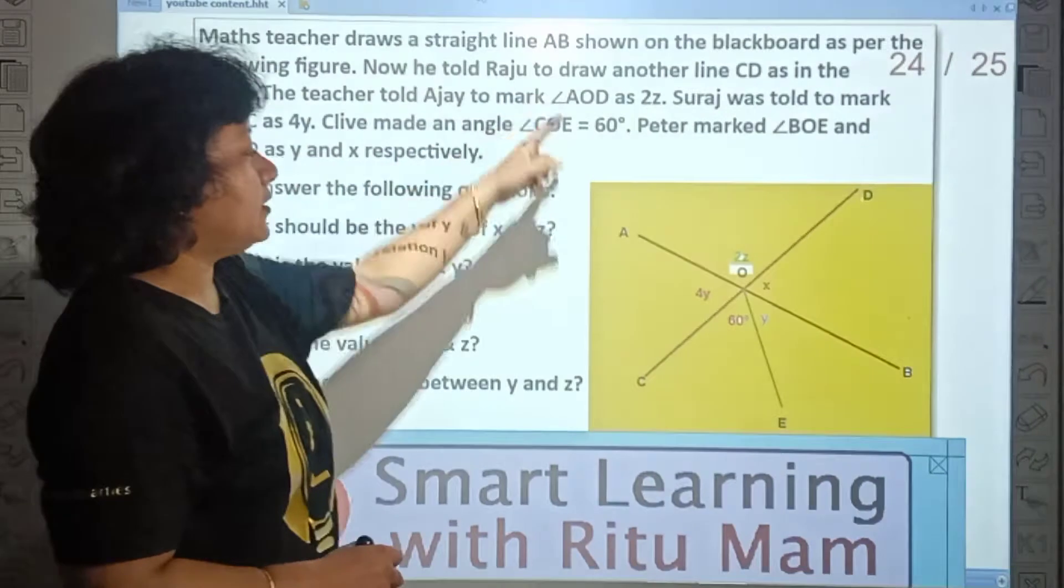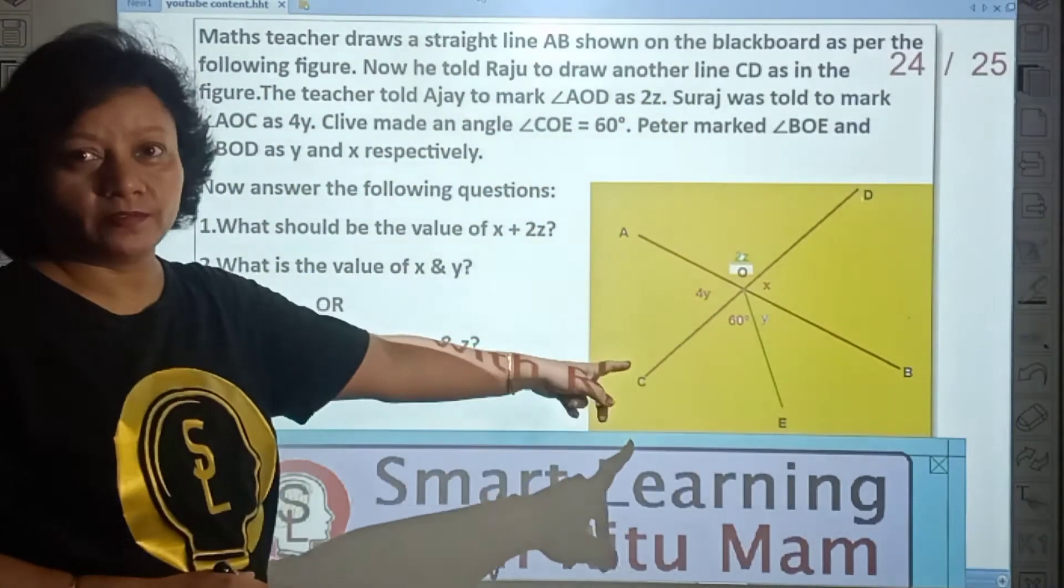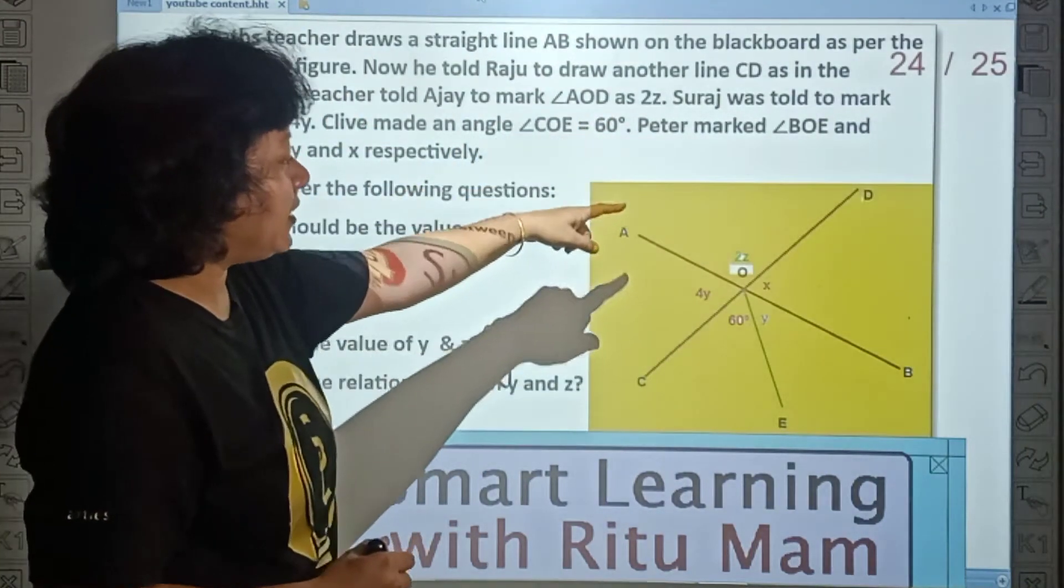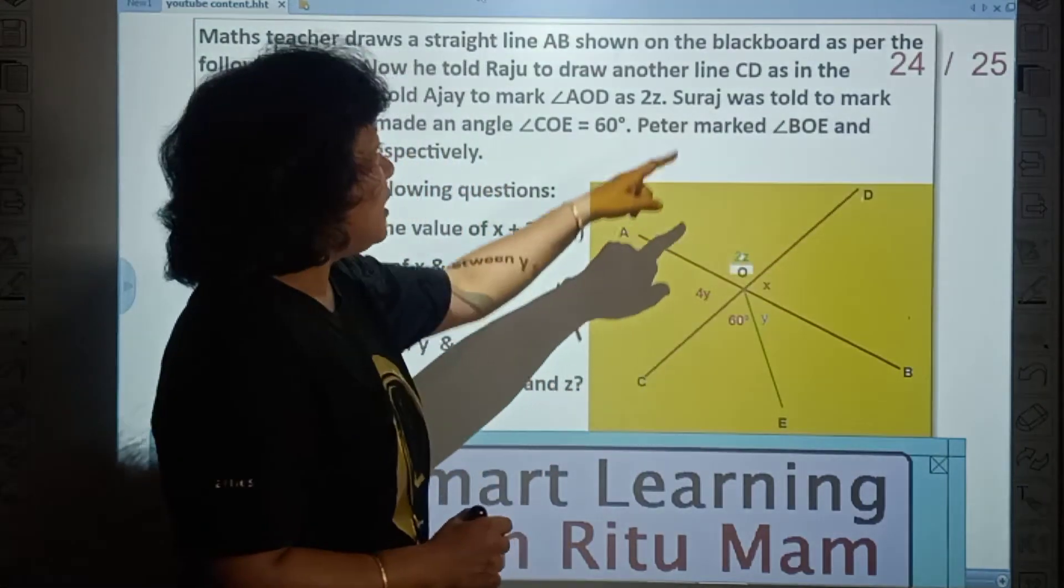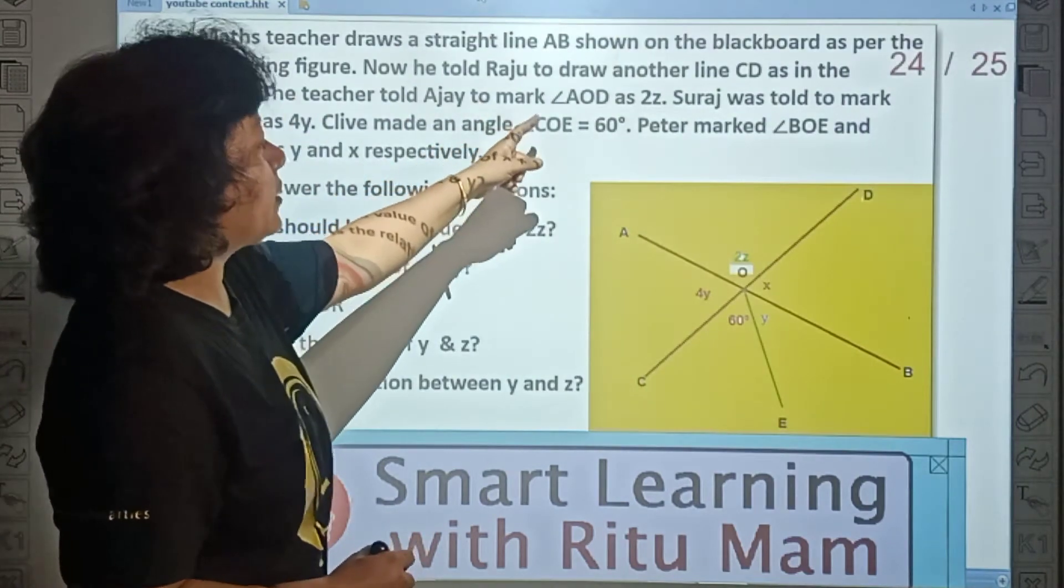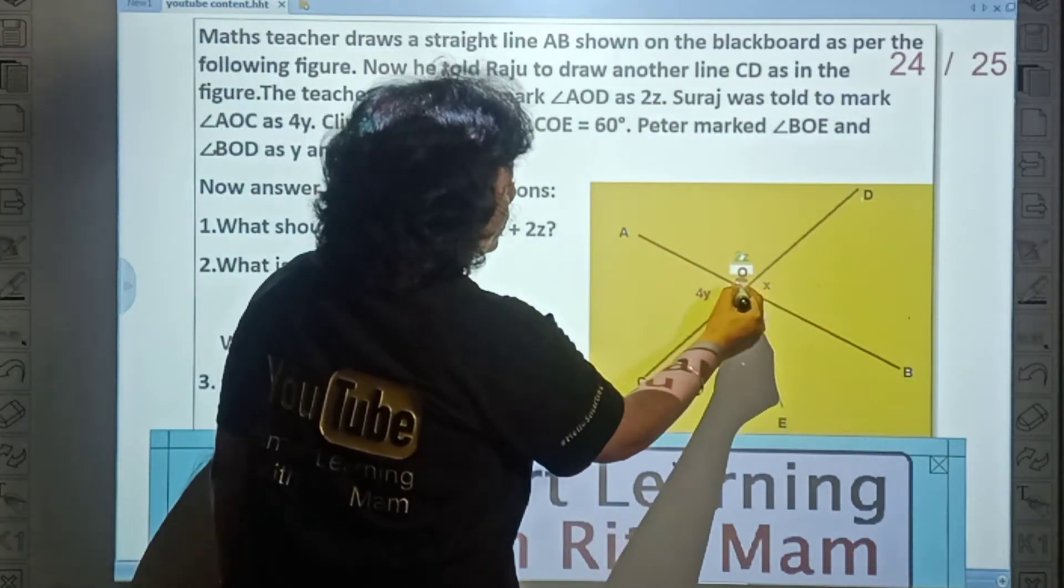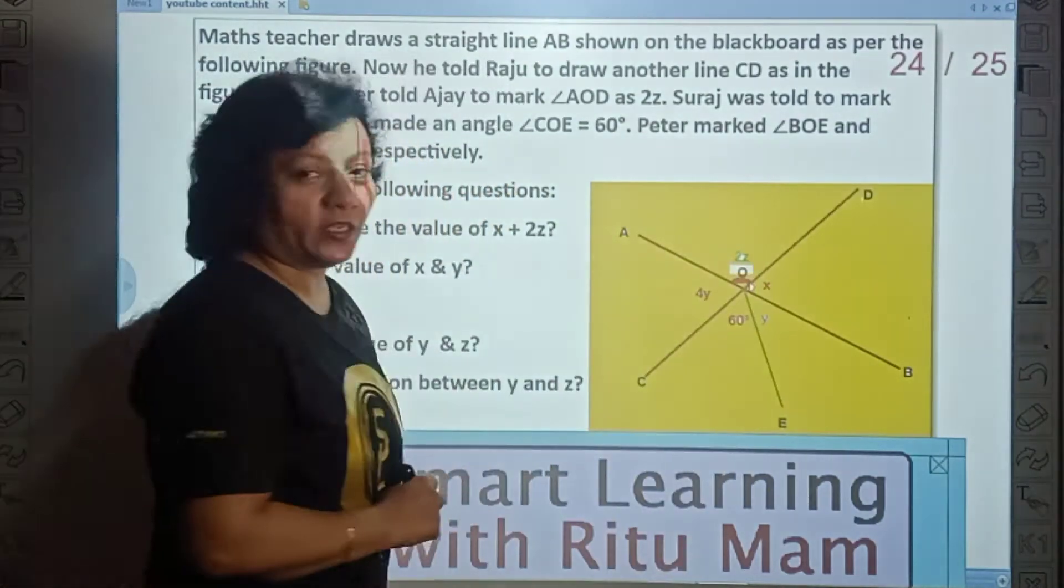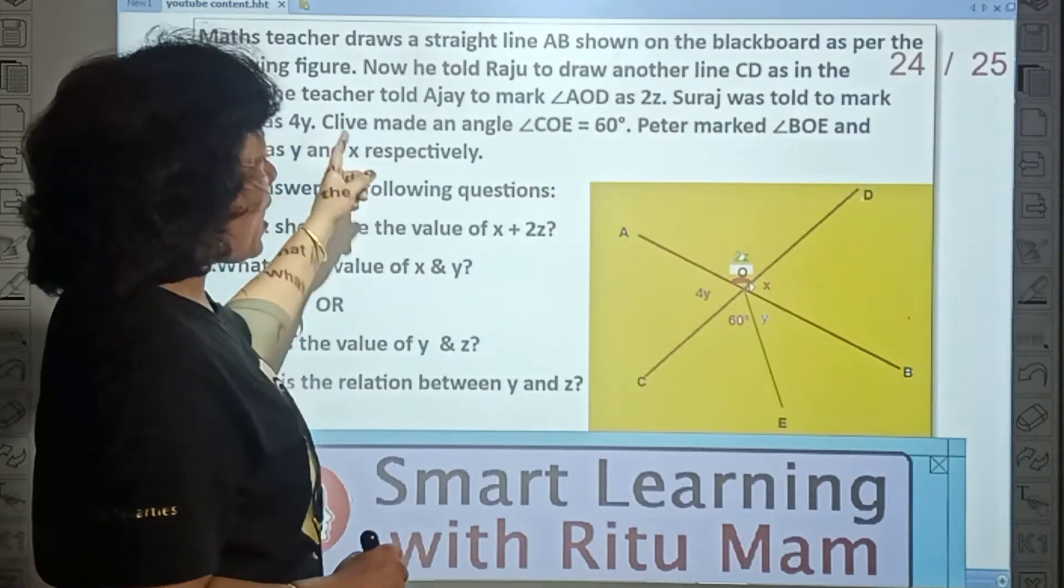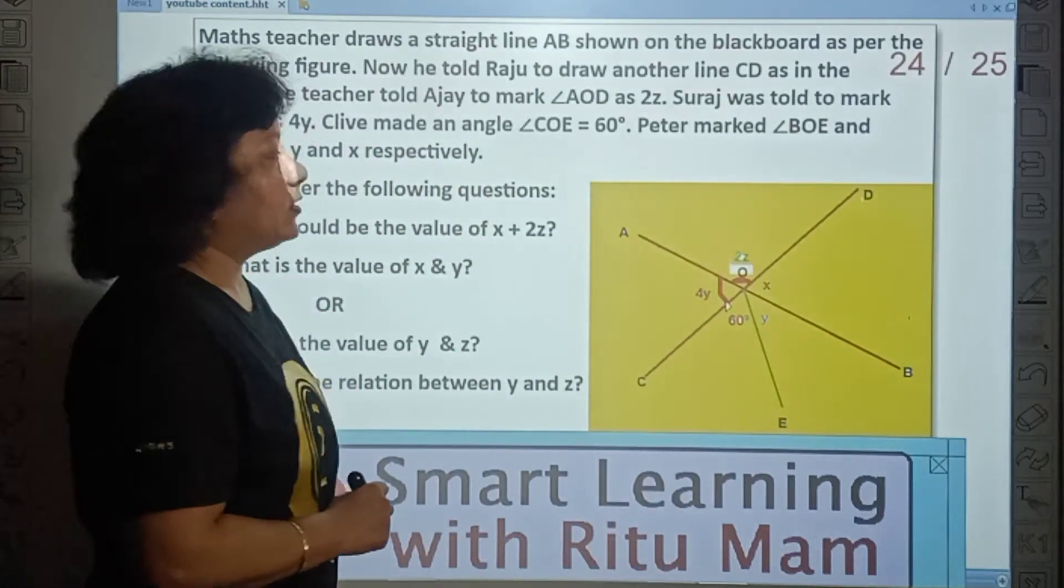The math teacher draws a straight line AB on the blackboard as per the following figure. Now he told Raju to draw another line CD as in the figure. Now the teacher told Ajay to mark angle AOD as 2Z. This angle AOD, this is 2Z. Suraj was told to mark AOC as 4Y. This angle is 4Y.